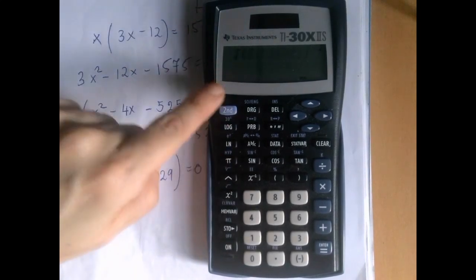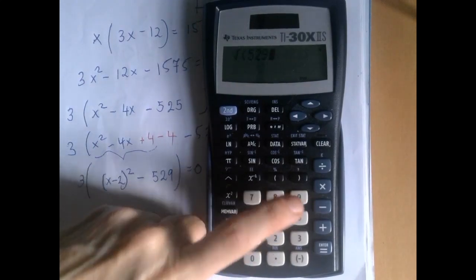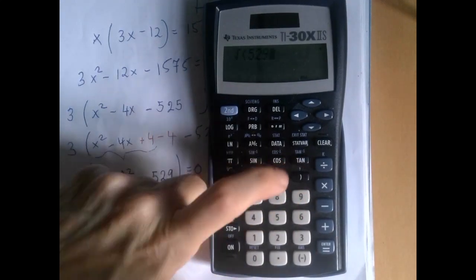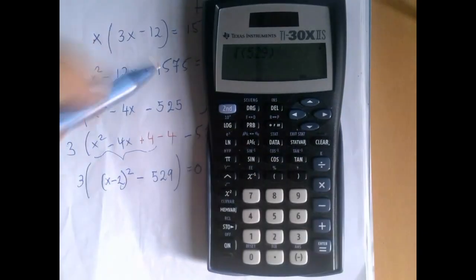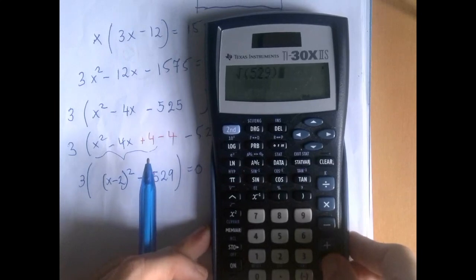So square root of, so the calculator opens the little square root sign, 529. And we should always close this parenthesis. If you don't do it now, it's not going to hurt, but later on it will get you if you don't do it.